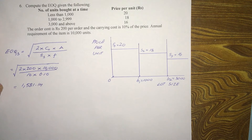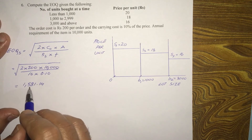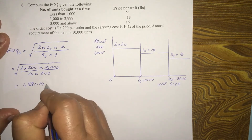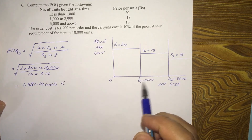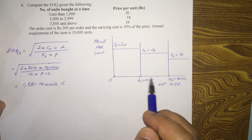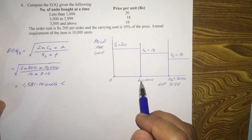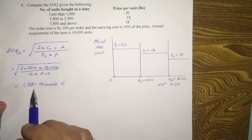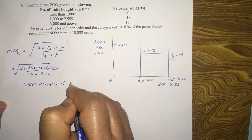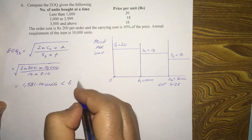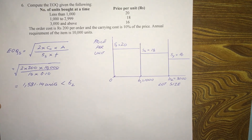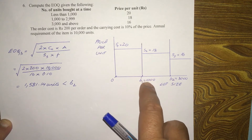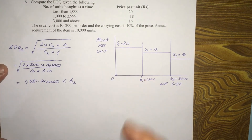EOQ3 of 1,581.14 units is less than B2 (3,000) but greater than B1 (1,000). So it falls between B1 and B2 — it is less than B2 but greater than B1.